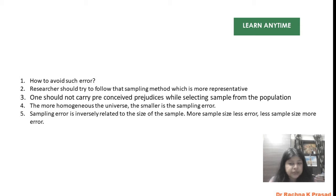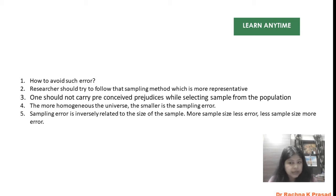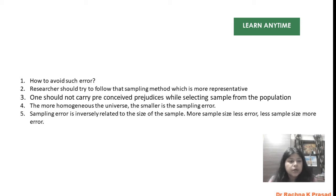If the method is not appropriate, then sampling errors will increase, and we cannot say there will be no errors, because in social science research errors are always present to some degree. The third point is that one should not carry preconceived prejudices while selecting samples from the population.